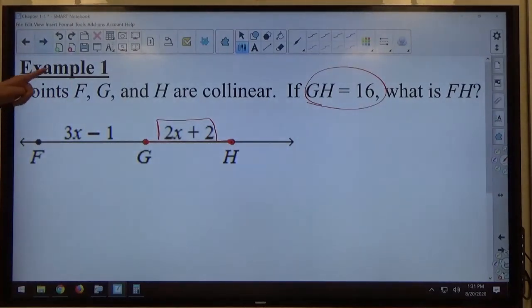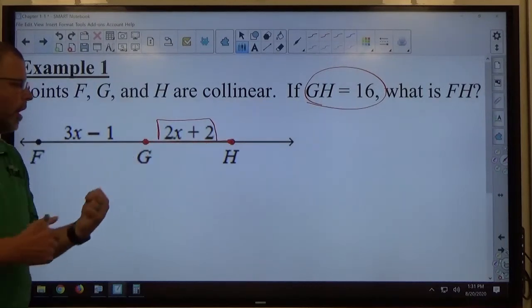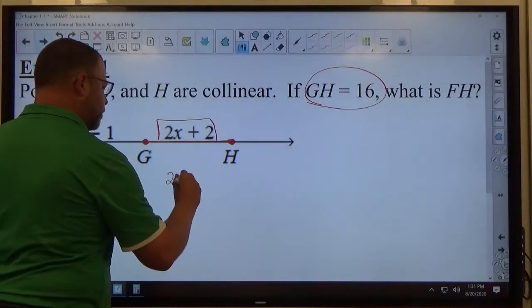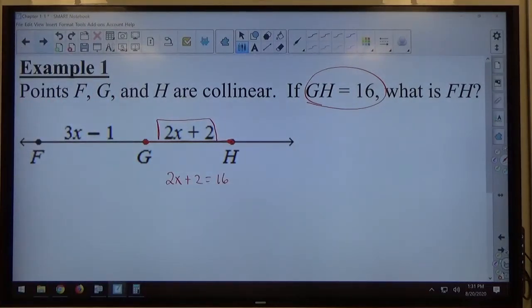So if GH equals 16, and from here to here is 2X plus 2, I know that 2X plus 2 must equal 16. They didn't tell me to find X, but that's just something, just before I even see what they're asking me for, where I can see, hey look, I can find X if I want to.